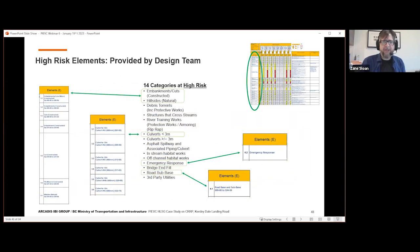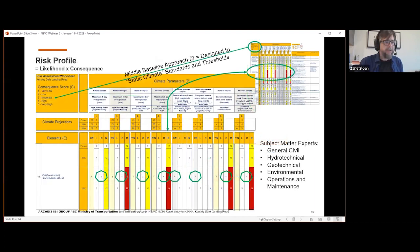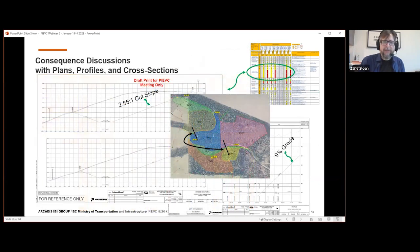This is from the Kersleydale Landing Road Project. Out of those 14 categories at high risk that were identified during the protocols, this project only actually had five of the categories at high risk in their project. That's the embankment cuts constructed and existing, hillsides existing, then we got our culverts there, less than three meters. We had a number of culverts to consider. Emergency responses, and of course, the road sub base we considered as well. So that was where we got together in a workshop, using a bit of a middle baseline method approach to assign the consequence scores. And really, this was the whole thing, the whole workshop really just focused on these consequence scores, and of course, the discussion that went along with it, which we recorded with a diligent scribe who was reporting the consequences and the discussions along the way.